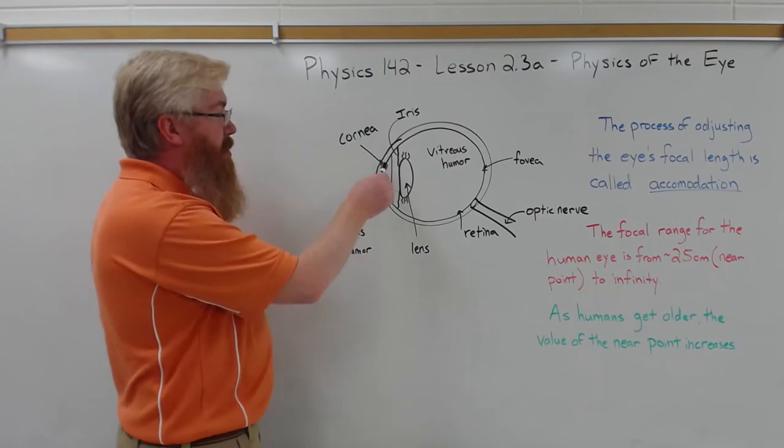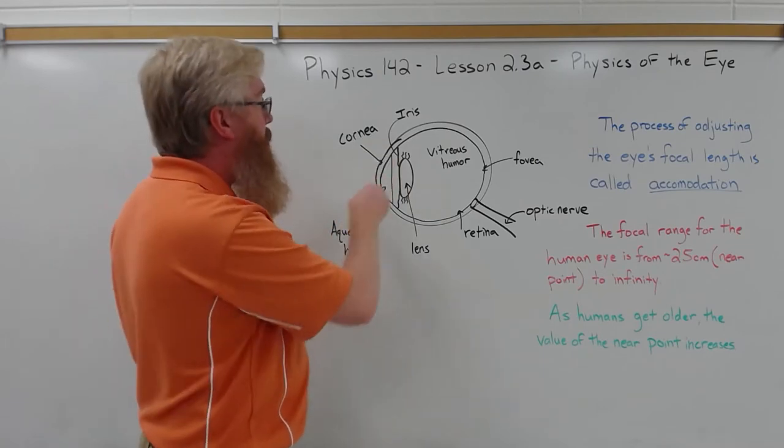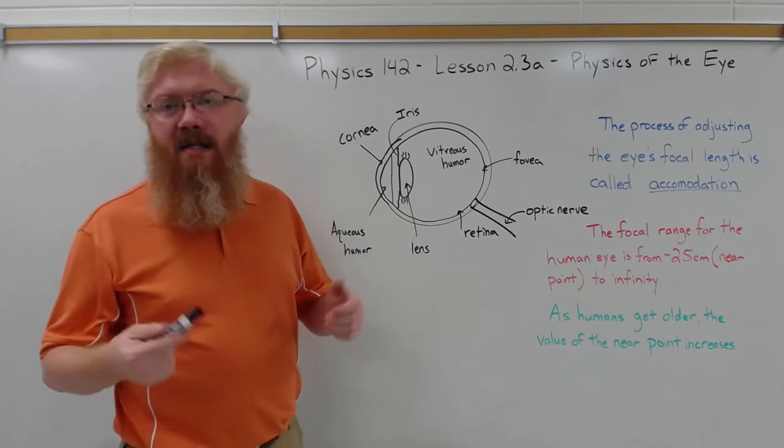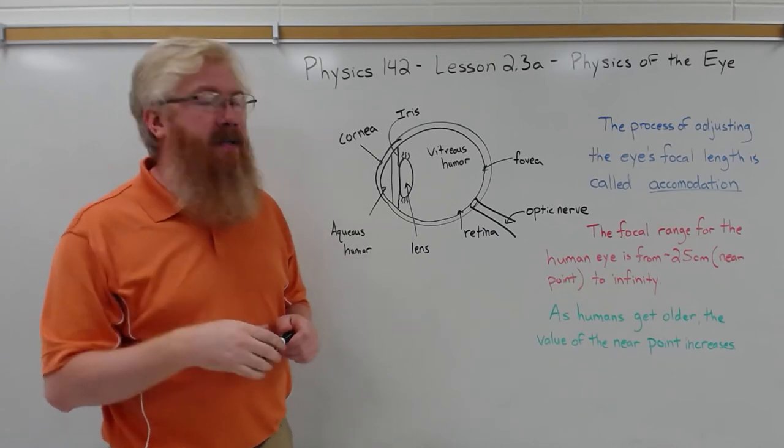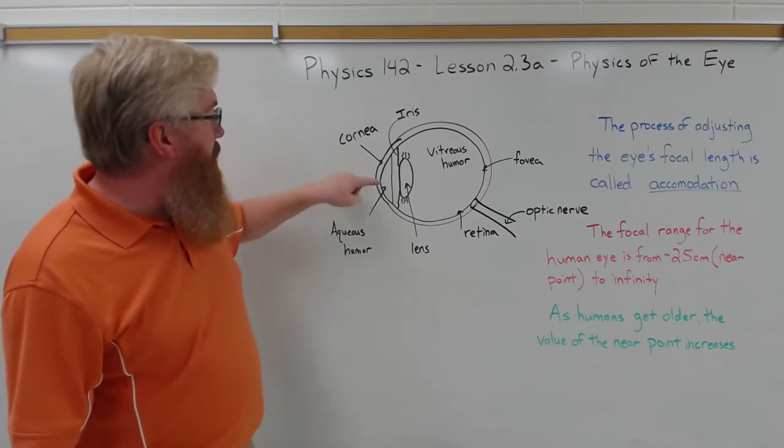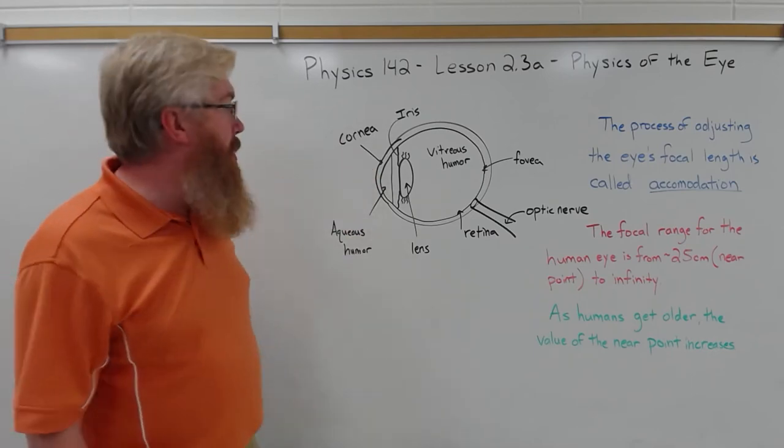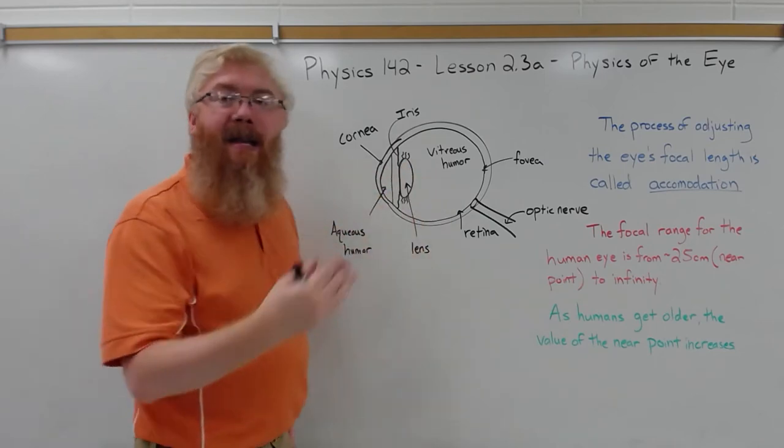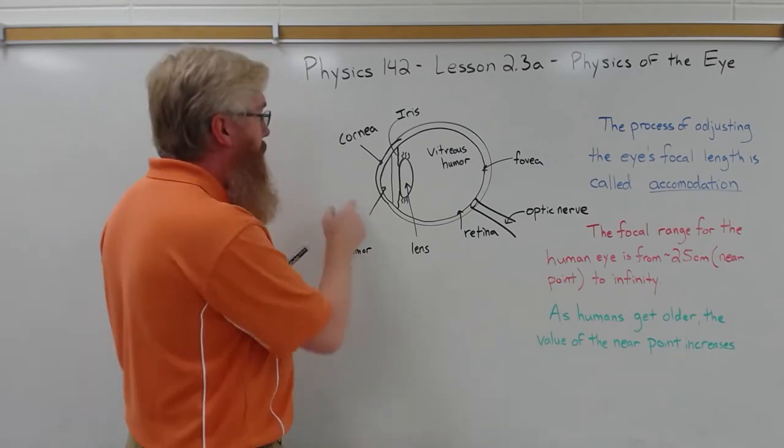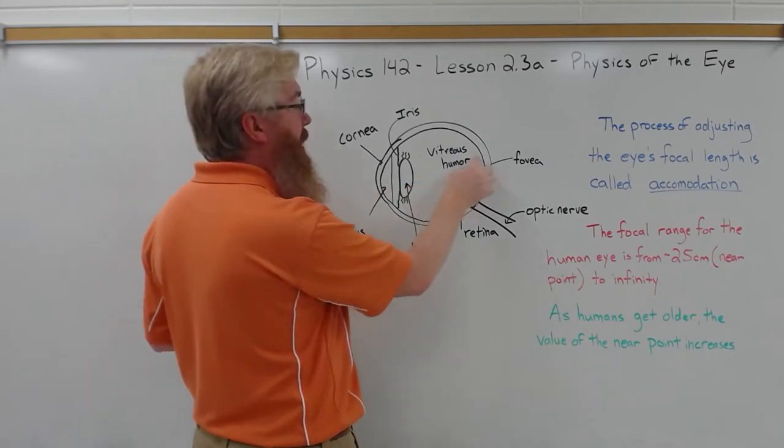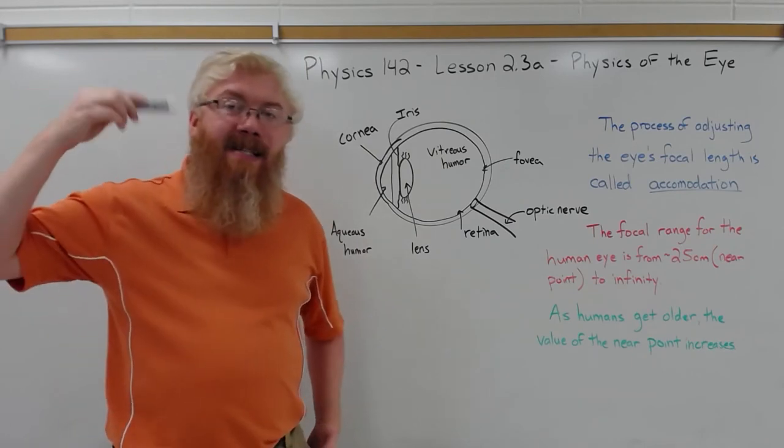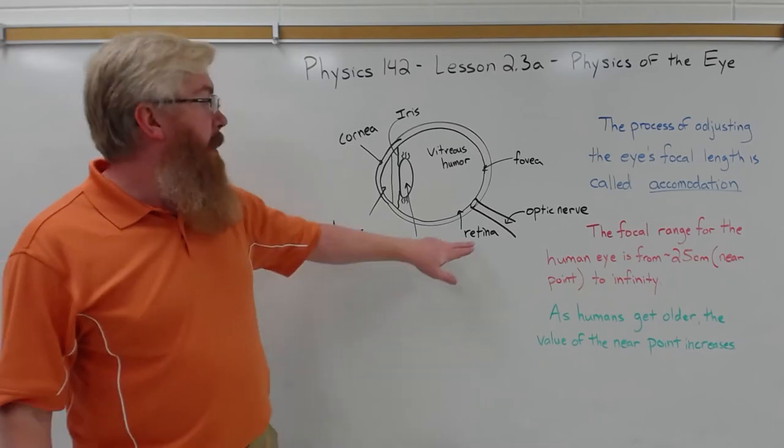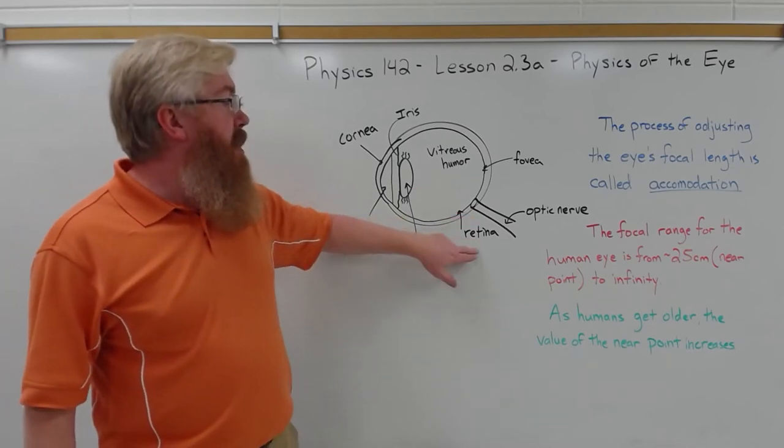Light first goes through the cornea from air to the cornea which does about two-thirds, or 60-70% of the vision correction and focusing. Then through the aqueous humor behind the cornea it reaches the lens of your eye which does the remaining focusing, taking the image and focusing it down onto the back of your eye where the light sensitive cells are, the rods and the cones which sit on your retina.